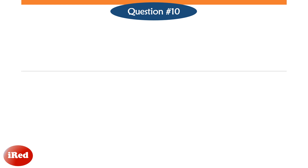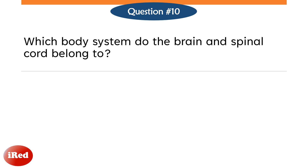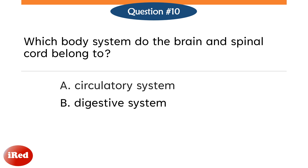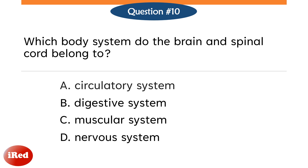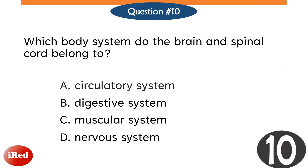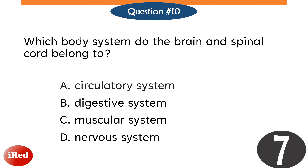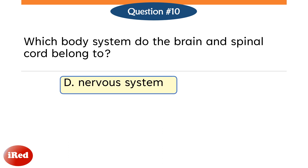Question number ten. Which body system do the brain and spinal cord belong to? Letter A, circulatory system. Letter B, digestive system. Letter C, muscular system. Letter D, nervous system. The correct answer is Letter D, nervous system.